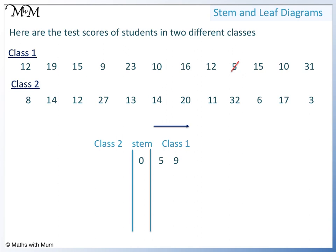Now we enter a 1 in the stem for numbers that have 1 in their tens column. We have 10 and 10 — there are two tens, so we write a 0 twice. Next we have 12 and 12: 12 has one 10 and a 2 in the ones column, so we write 2 twice. Now we have two 15s, so we write 5 twice. We have 16 represented with a 6, and 19 represented with a 9.